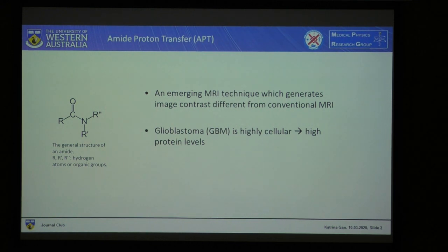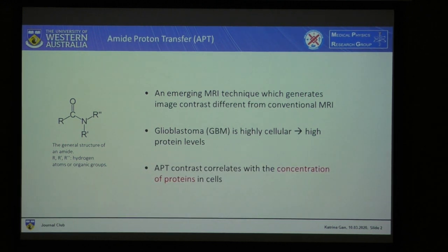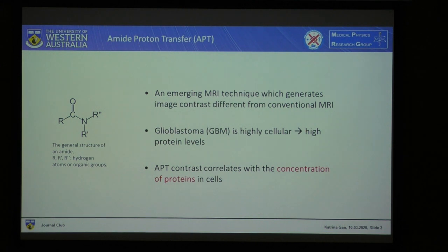Glioblastomas are highly malignant, and because of this they will have a high protein concentration. This is good for APT imaging because the contrast on the images correlates with the concentrations of proteins in the cells. So areas of hyper-intensity on the images relate to the existence of a tumour there.